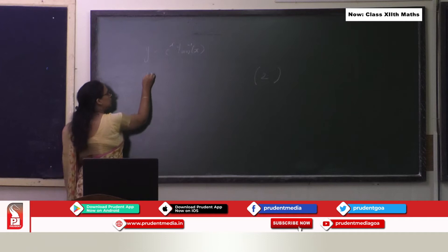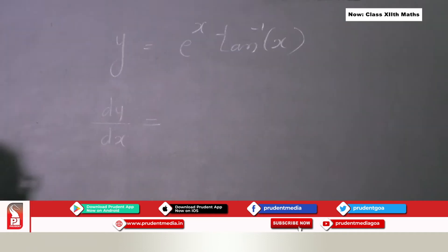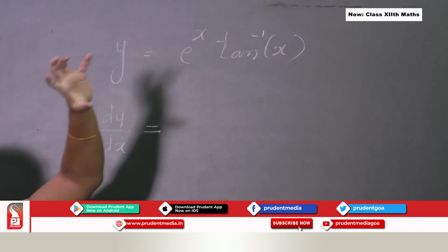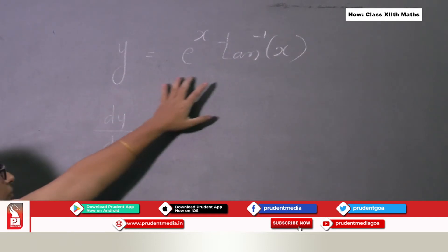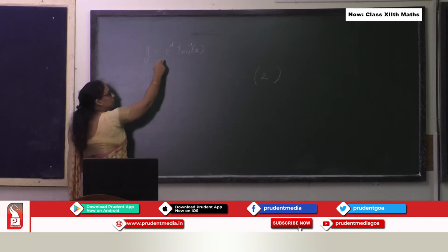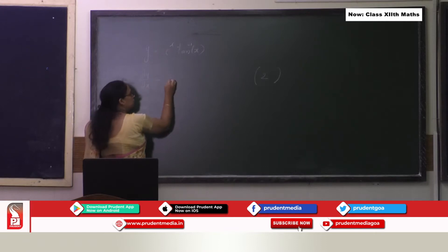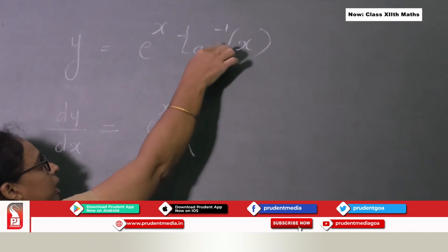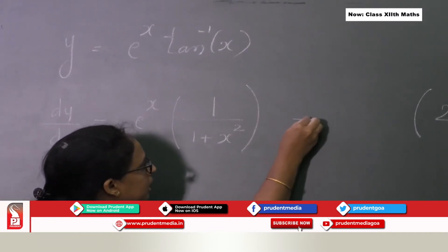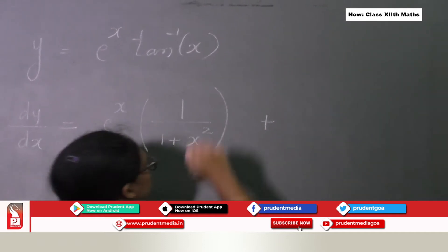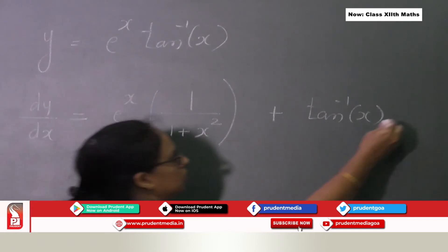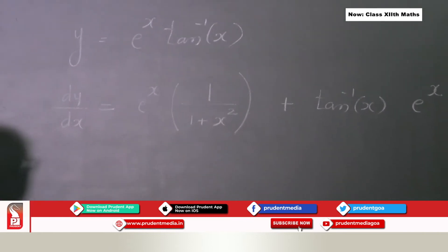When differentiating with respect to x using the product rule: dy/dx equals the first function kept the same, multiplied by the derivative of the second function. The derivative of tan inverse of x is 1 upon (1 + x²). Then plus the second function tan inverse of x, multiplied by the derivative of the first function e^x, whose derivative is the same. This gives the value of dy/dx.